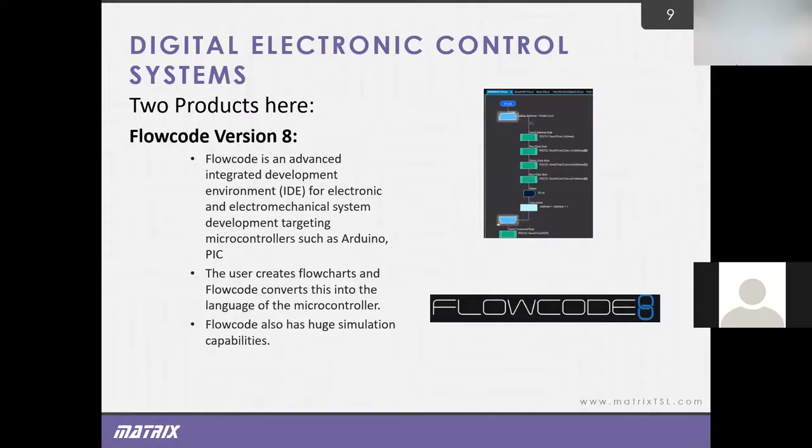Another learning outcome that we cover nicely is the digital electronic control systems. For this particular learning outcome, we have two relevant products. One's a software called Flowcode. You may be aware of Flowcode. It's basically a software that is used for programming microcontrollers, such as PICs or Arduinos. The user will create a flowchart. Everyone can draw a flowchart or design a flowchart. It's drag and drop. What that does, it converts the flowchart to the language of the microcontroller. Then you can simulate what the microcontroller should be doing on screen. Flowcode actually, you don't need hardware. You can use hardware with it. However, for this particular learning outcome, hardware isn't totally necessary for the programming side. That's why Flowcode is very usable, because you can do a lot of the simulations on screen.